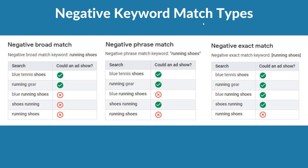I've pulled these match type graphics from Google Ads. Negative broad match keywords perform similarly to modified broad match, but in reverse — instead of targeting keywords you're excluding them. So if you have a negative broad match keyword of 'running shoes,' and someone types in 'shoes running,' an advertisement will not show. Compare that to phrase match: if someone types 'shoes running' and your negative phrase match keyword is 'running shoes,' your ad will still show.